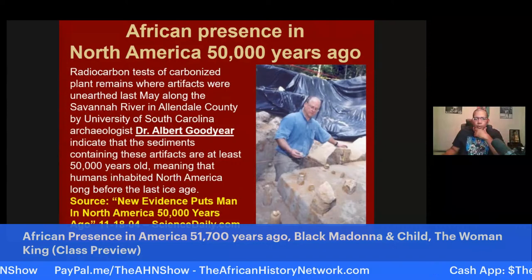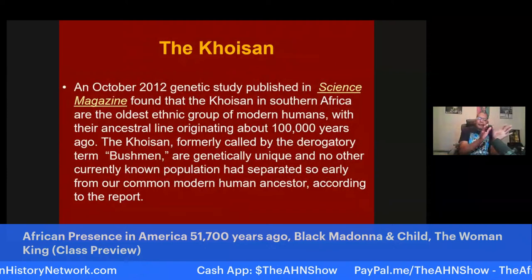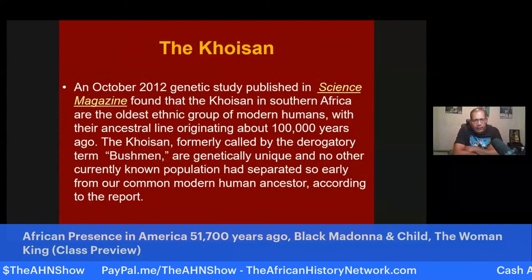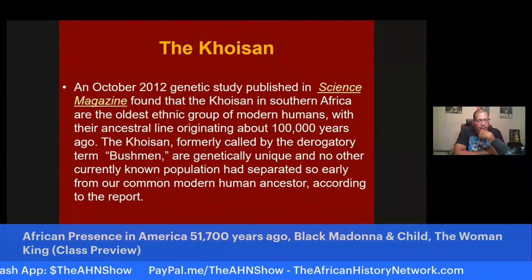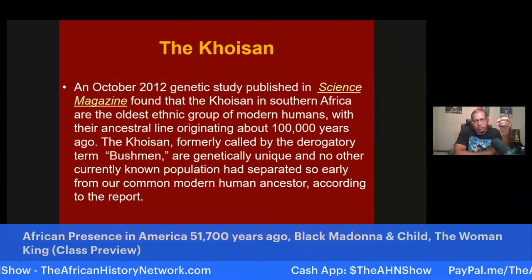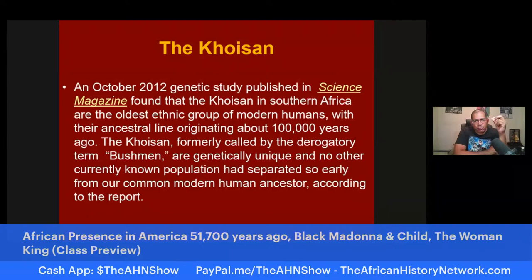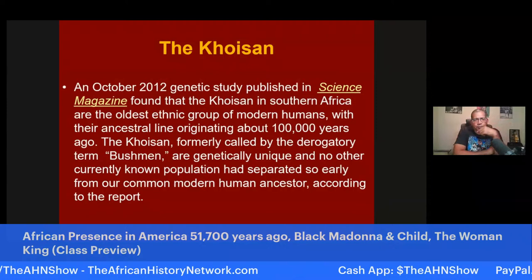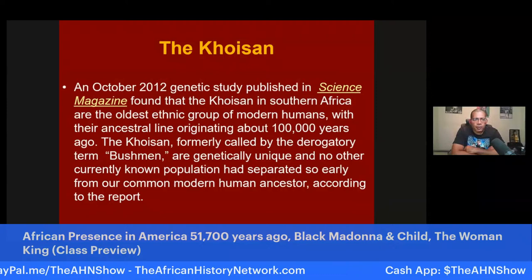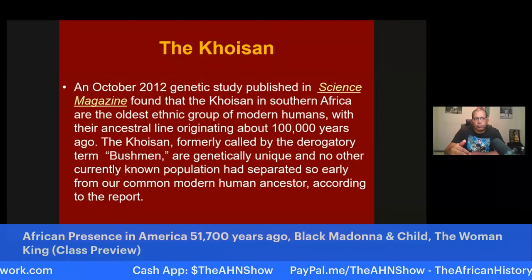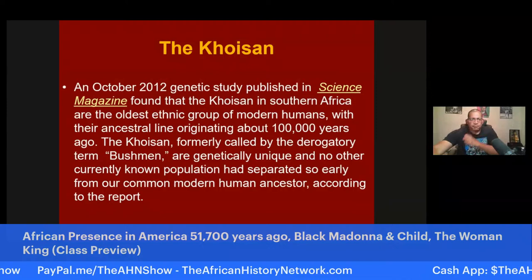The Khoisan are who was here at least 51,700 years ago in the US — the Khoisan, who have the oldest DNA on the planet. They go all around the world; they are the short-statured Africans and are the ancestors of the Twa. In October 2012, a genetic study published in Science magazine found that the Khoisan in southern Africa are the oldest ethnic group of modern humans, with their ancestral line originating about 100,000 years ago. The Khoisan — formerly called by the derogatory term 'Bushman' — are genetically unique, and no other currently known population had separated so early from our common modern human ancestor.